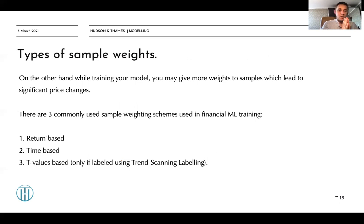There are three commonly used sample weighting schemes in financial machine learning. The first type are called returns-based weights, where we use the returns as the sample weight.